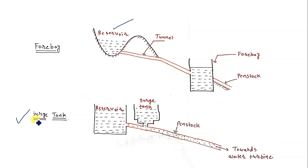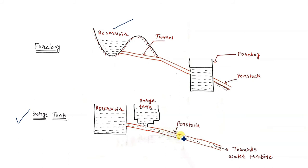In a similar way, the surge tank is used to reduce the water hammer effect on the penstock. Due to a sudden change of load on the turbine — whether an increase or decrease — the surge tank helps to control the water pressure on the penstock.